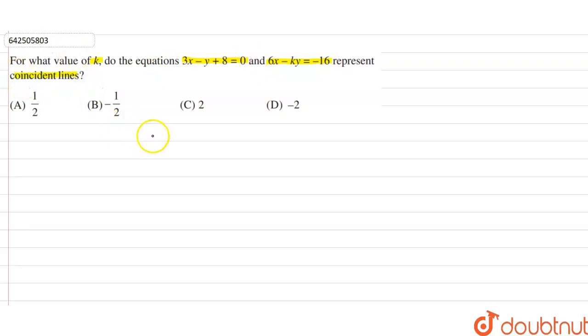So the condition for coincident lines is that the ratio of a1 divided by a2 is equal to the ratio of b1 and b2 is equal to the ratio of c1 and c2.